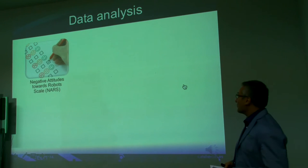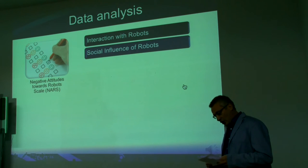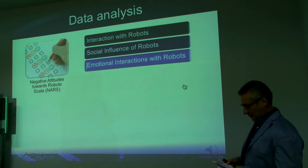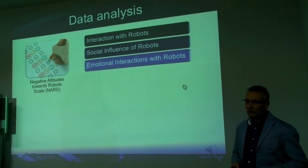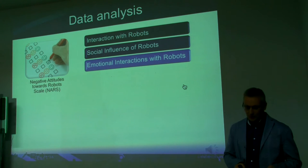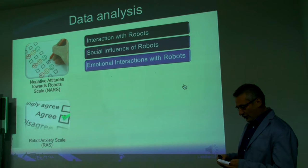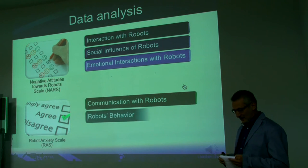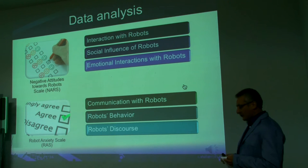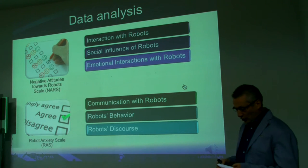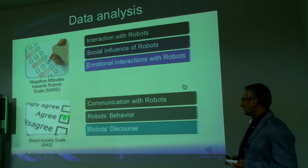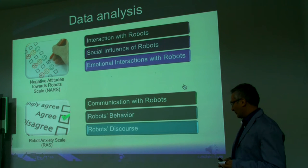The NARS questionnaire has been used to measure the psychological state reflecting opinions that people used to have about robots. It presents three types of questions: negative attitude toward interaction with robots, toward social influence of robots, and negative attitude toward emotional interaction with robots. The RAS questionnaire measured emotion of anxiety from interaction with robots having function of communication in daily life. It also presents three types of questions: communication with robots, negative attitude about robot behavior, and about robot discourse.